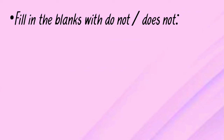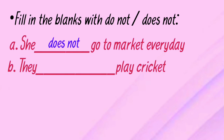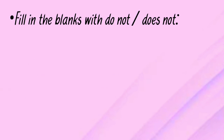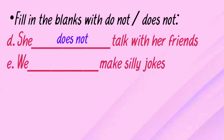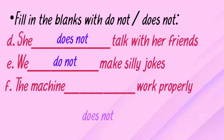Now the next exercise: fill in the blanks with 'do not' or 'does not.' She ___ go to market every day — does not. They ___ play cricket — do not. I ___ drive my car as I have no license — do not. She ___ talk with her friends — does not. We ___ make silly jokes — do not. The machine ___ work properly — does not. In this exercise we have understood when to place 'do not' and when to place 'does not.'